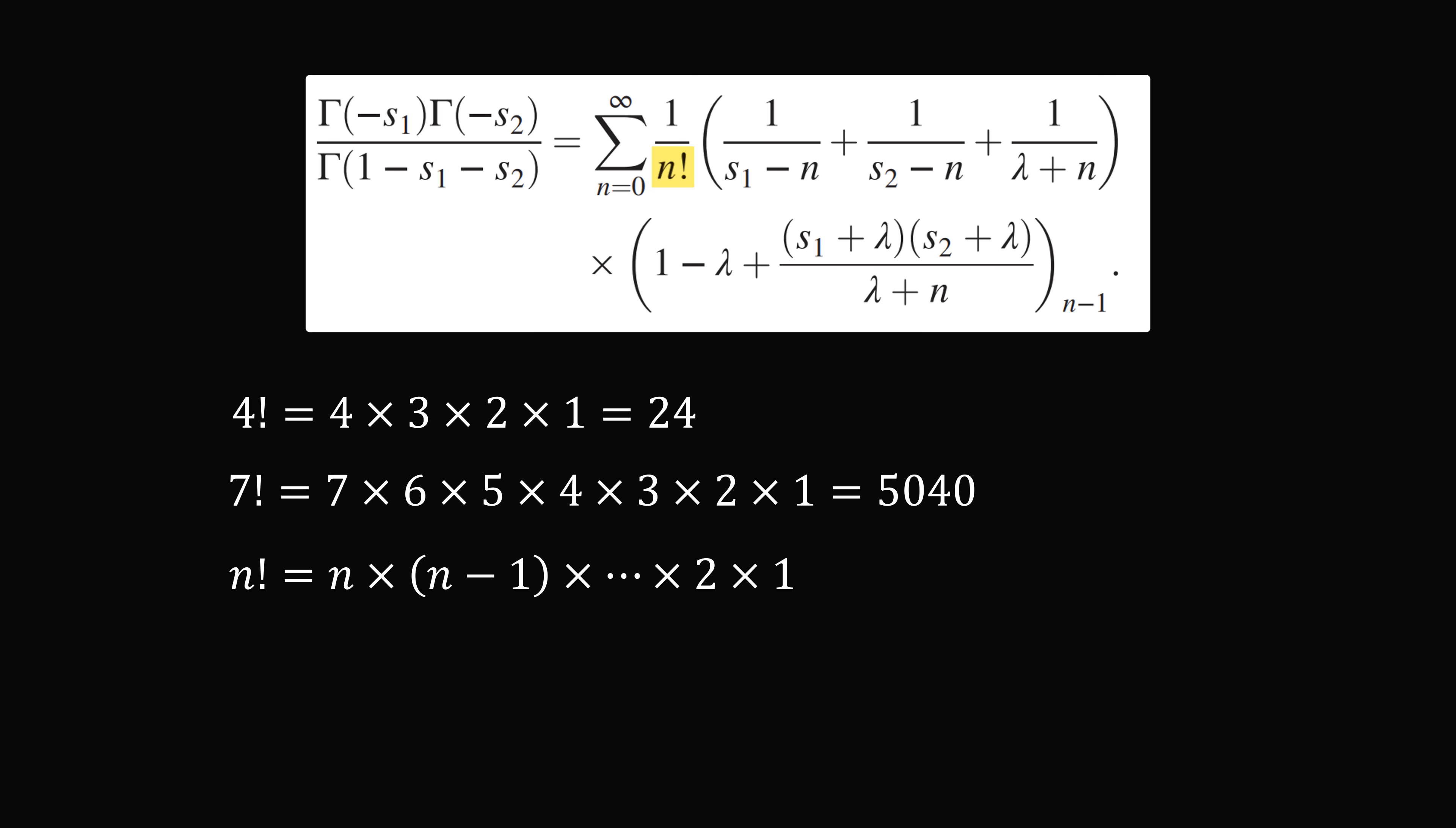And in general, for a whole positive number n, we have n factorial is equal to n multiplied by n minus 1, going all the way down to 1. We of course have the exception that 0 factorial is equal to 1. That's a topic for another day.